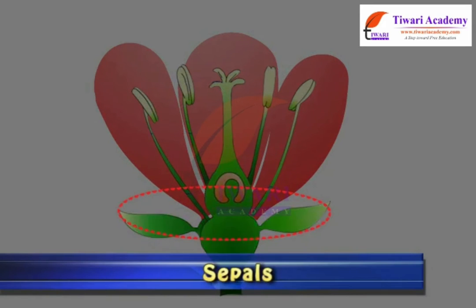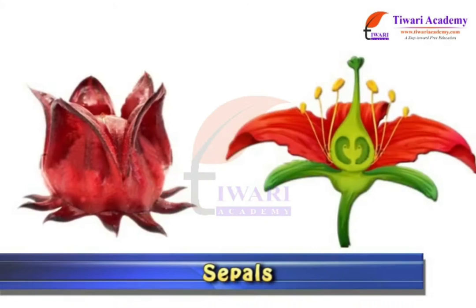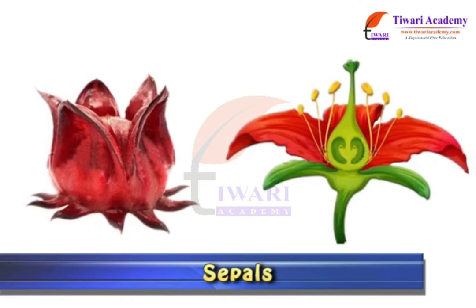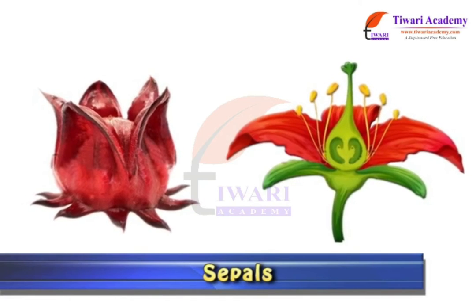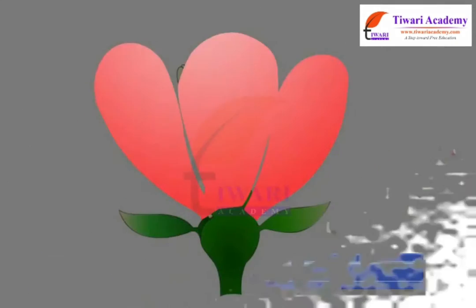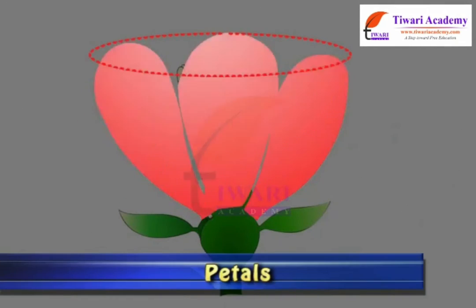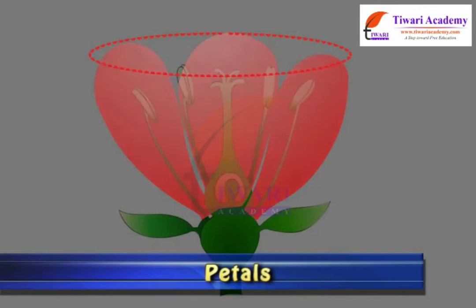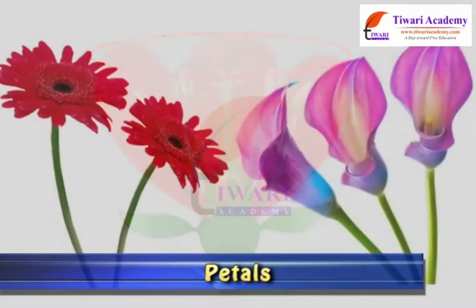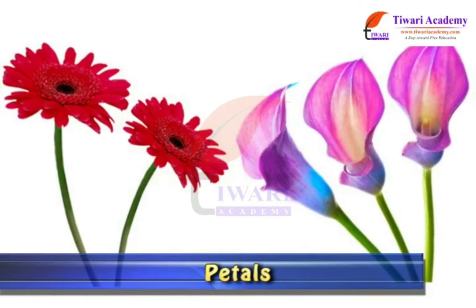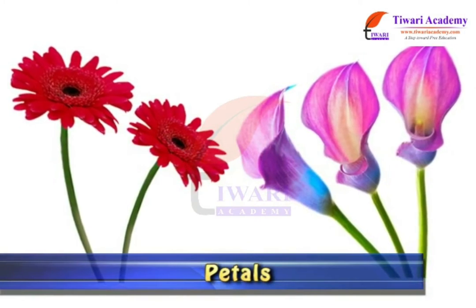Sepal is the outermost whorl of a flower, which is usually green in color. Sepals may be free or united. Petal is the second whorl of a flower, which is usually colored. Petals may be free or united.